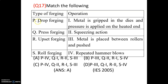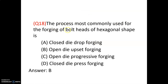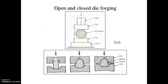Types of forging: In drop forging, the material is subjected to repeated hammer blows. In press forging, metal is gripped in dies and pressure is applied on the heated end. In upset forging, a squeezing action is performed. In roll forging, metal is placed between rollers and pushed. The process most commonly used for forging bolt heads of hexagonal shape is open die upset forging.